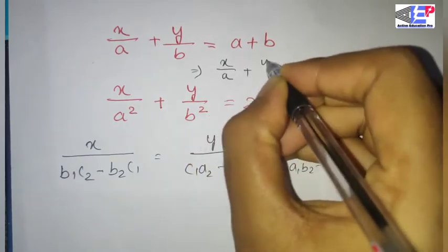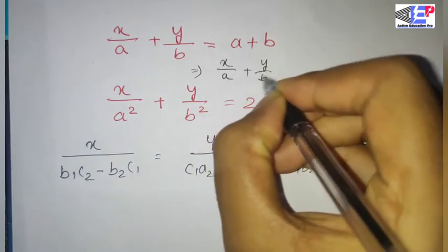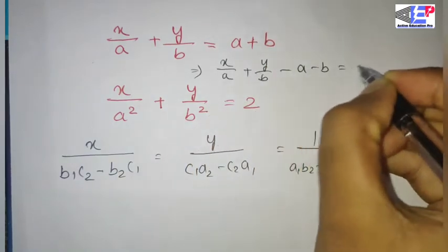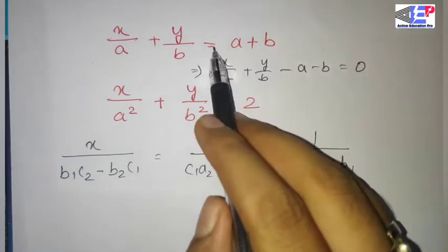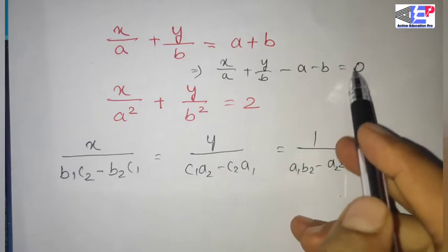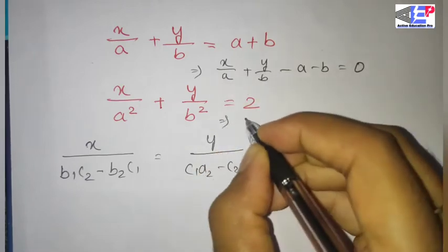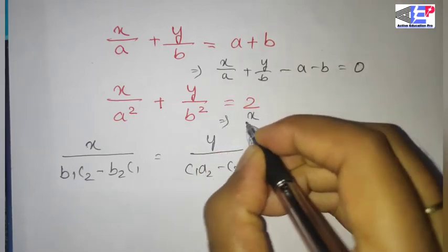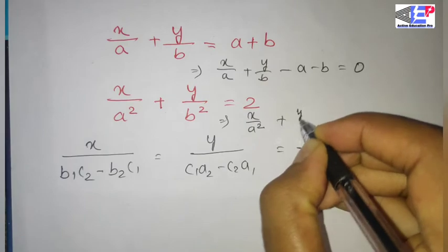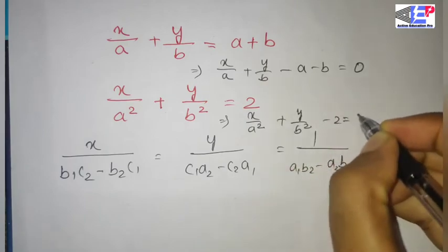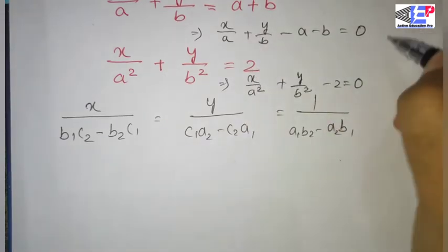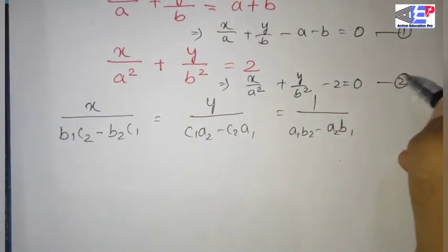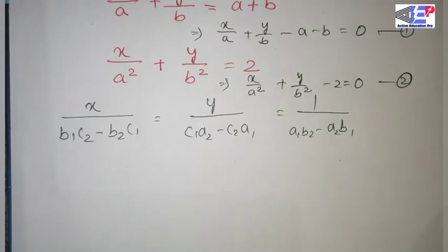x·y·a plus y·y·b minus a minus b is equal to 0 because c is constant. So c1 and c2, the left side is equal to 0. The second equation is x·y·a² plus y·y·b² minus 2 is equal to 0. Okay, here we go — we apply a1, b1, c1.